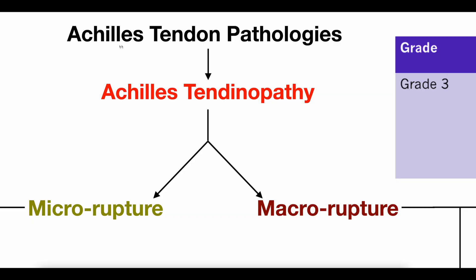In this video and the next, we're going to be discussing Achilles tendon pathologies, and in general these can be termed Achilles tendinopathies. Anytime you use the term tendinopathy, it's a very general umbrella term. If you say this patient has a tendinopathy, you're really not being very descriptive — it's just any dysfunction, damage, injury, or pathology of a tendon. Throwing 'Achilles' in front of it refers to the Achilles tendon, so we need to be more specific.